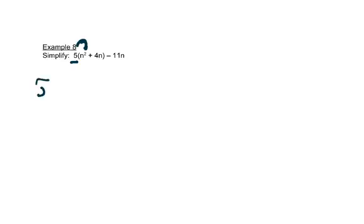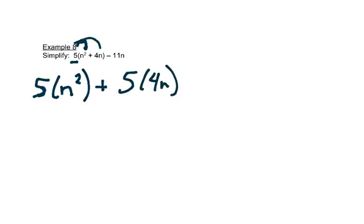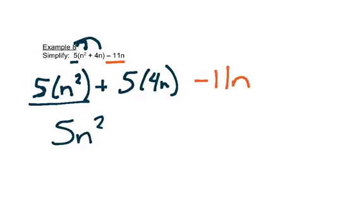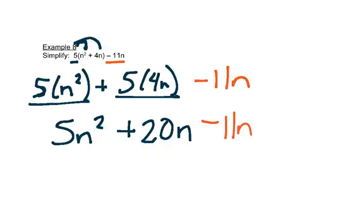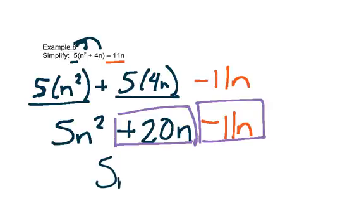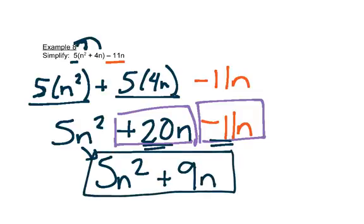In this last example, the 5 is smashed against the parenthesis, meaning multiplication — we multiply everything in the parenthesis by 5. So we get 5 times n squared, written as 5n squared, plus 5 times 4n, which is 20n. We still have minus 11n on the end. The 20n and 11n are like terms because they both have n, so we combine them: 20 minus 11 is 9, giving plus 9n. The final answer is 5n squared plus 9n.